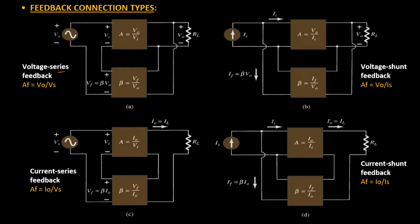The term voltage actually refers to connecting the output voltage as input to the feedback network. Out of these four connections, wherever you find voltage at the start of the name, you will see that this output voltage is being fed as input to the feedback network.